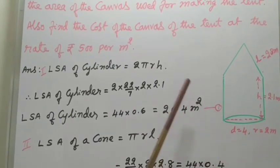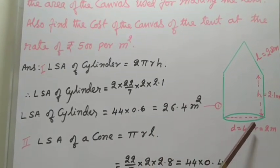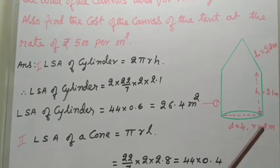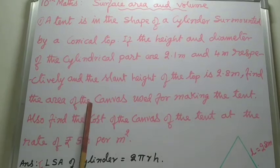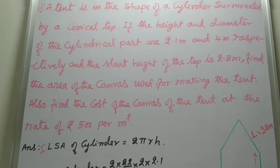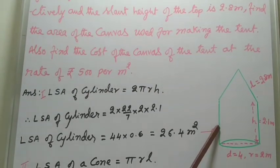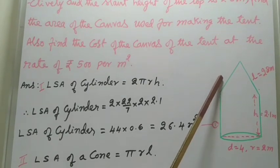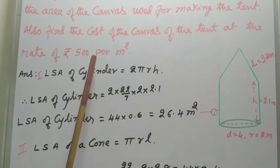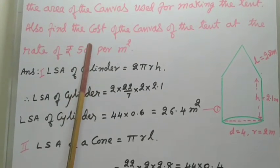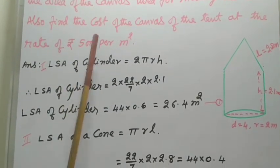If you use it directly, the problem will be wrong. So, read slowly once or twice, then only you can understand perfectly. Find the area of the canvas, that means cylindrical part area and conical part area. Both you have to calculate and then cost also you have to calculate at the rate of Rs. 500.